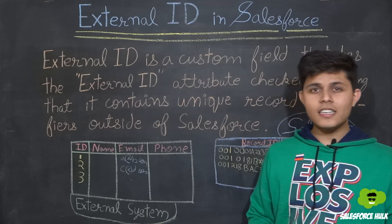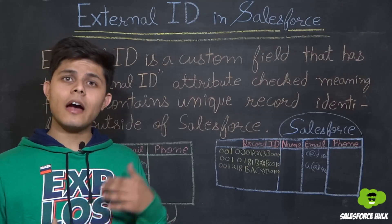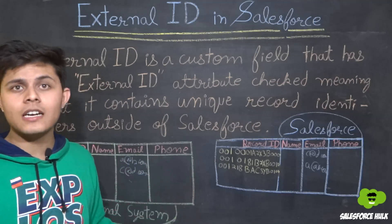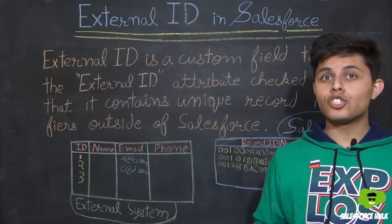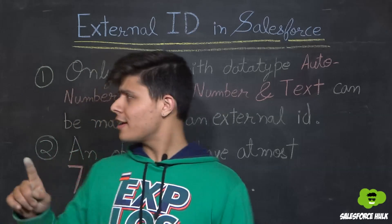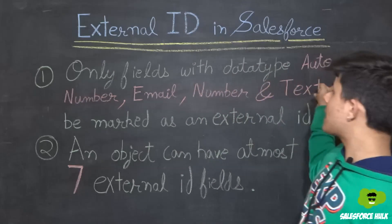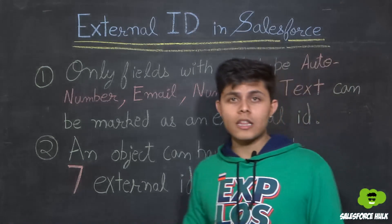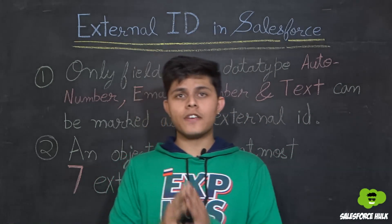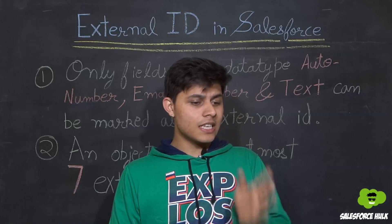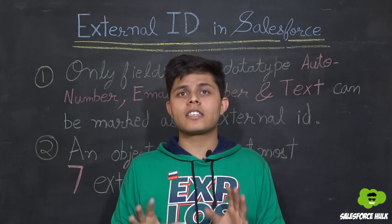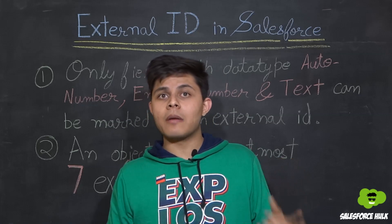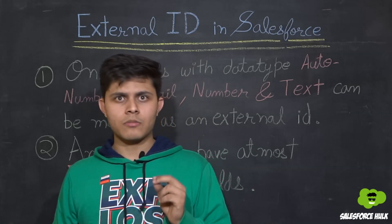This is what external IDs are used for. Now you can update and upsert records using any custom field rather than just the record ID. But there are some limitations. The first limitation is: only fields with data type auto number, email, number, and text can be marked as an external ID. No other field of any other data type can be used as an external ID.